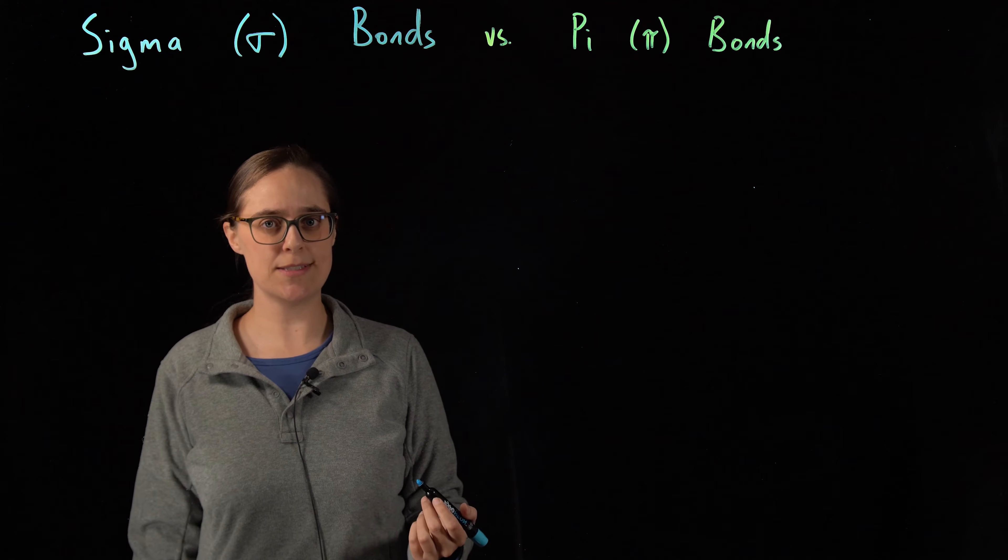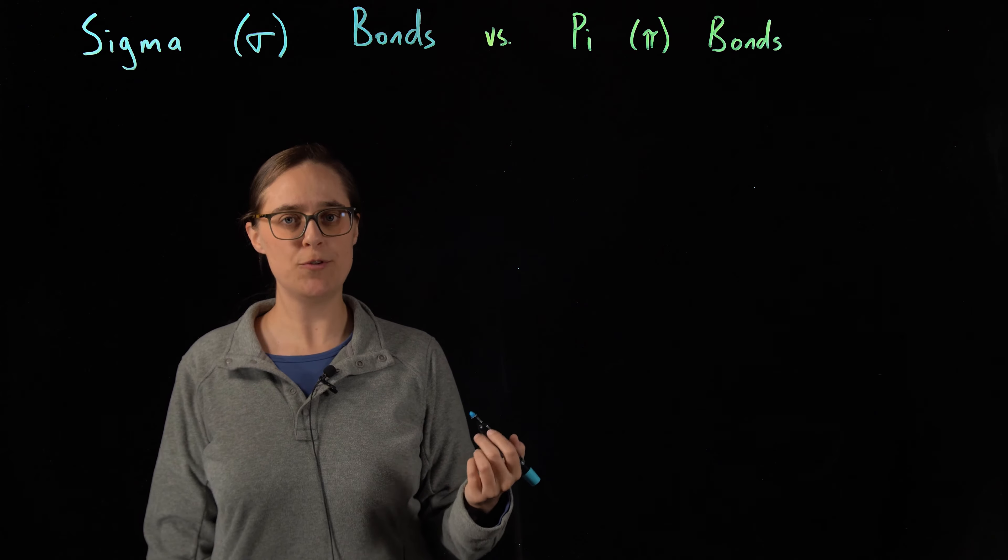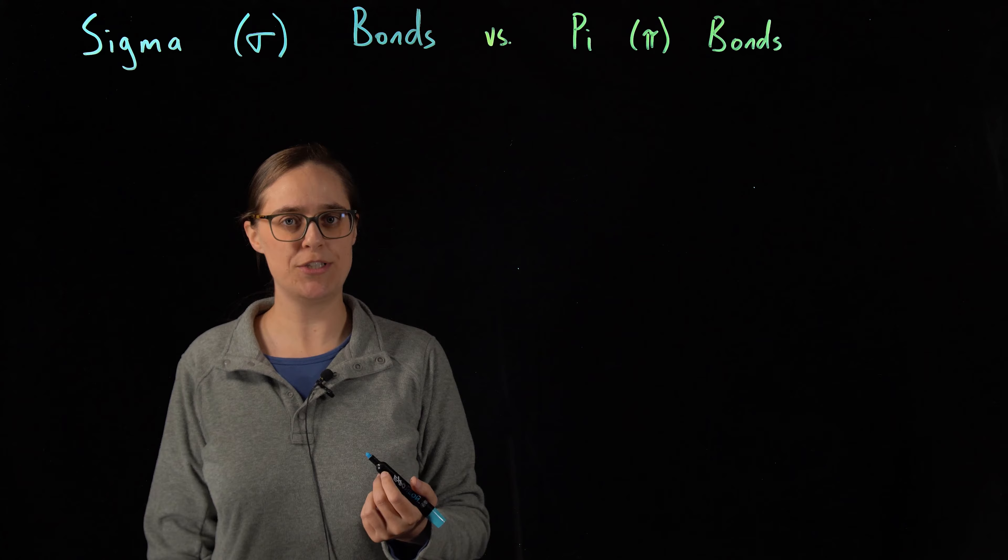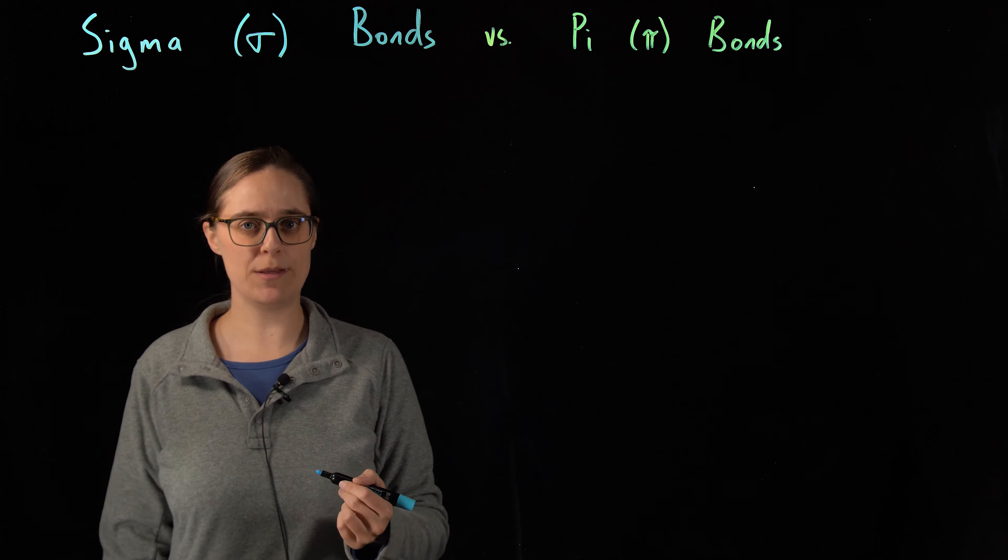Orbitals come in different shapes and sizes, but if the orbitals of two different atoms overlap and share electrons, that's called a covalent bond.